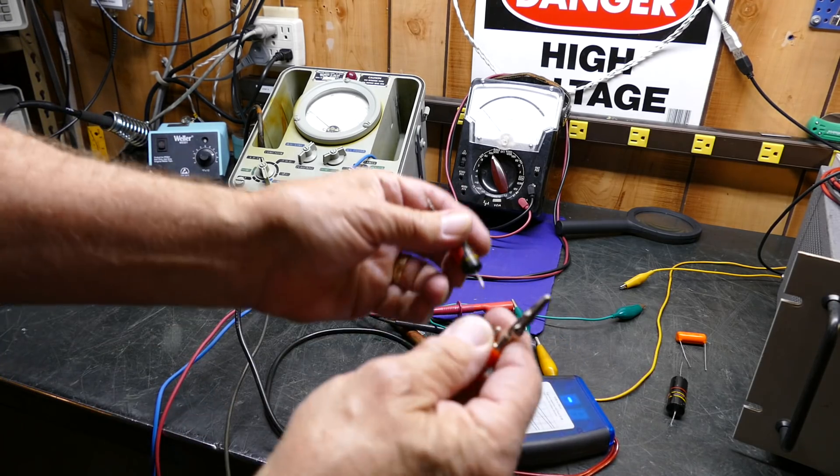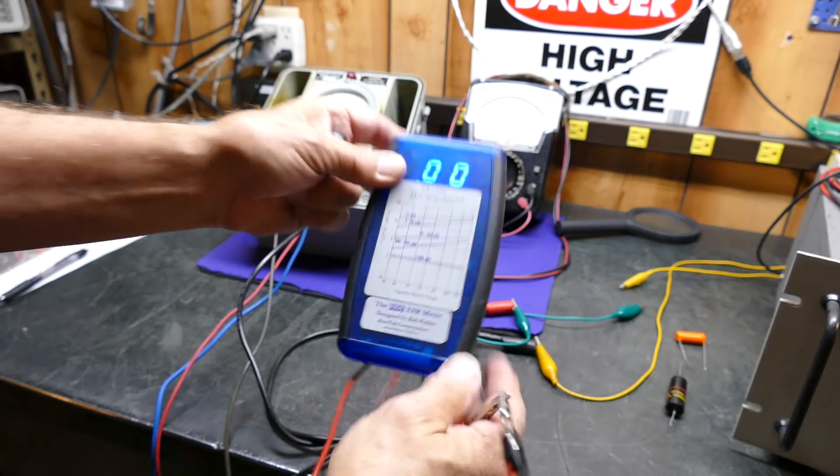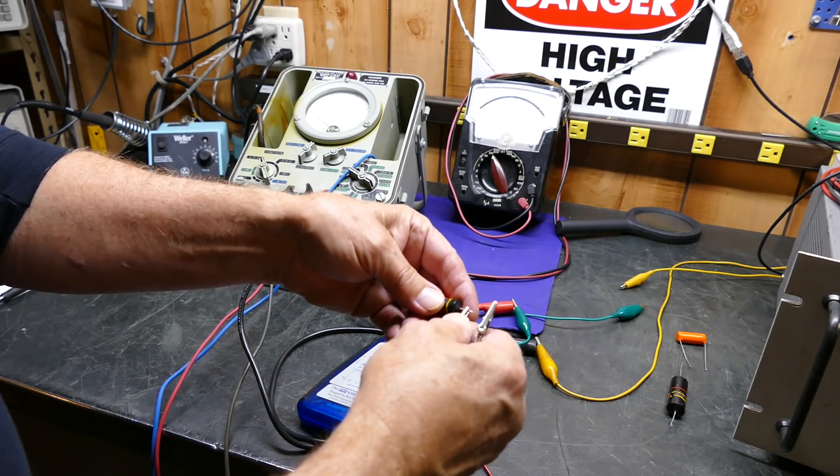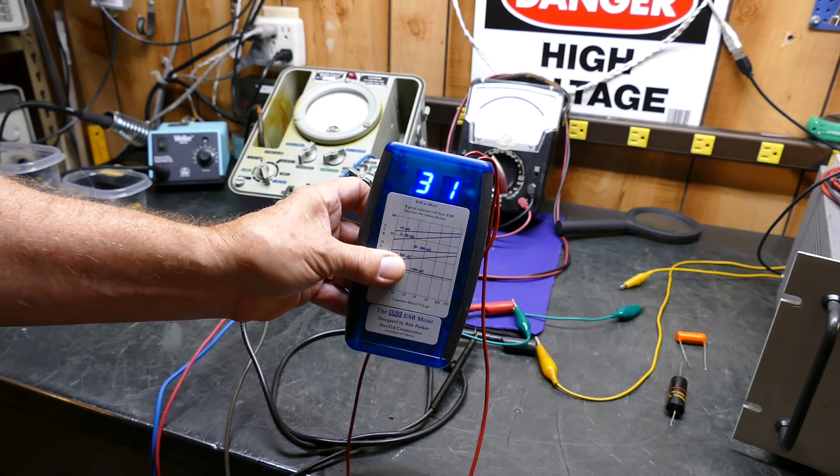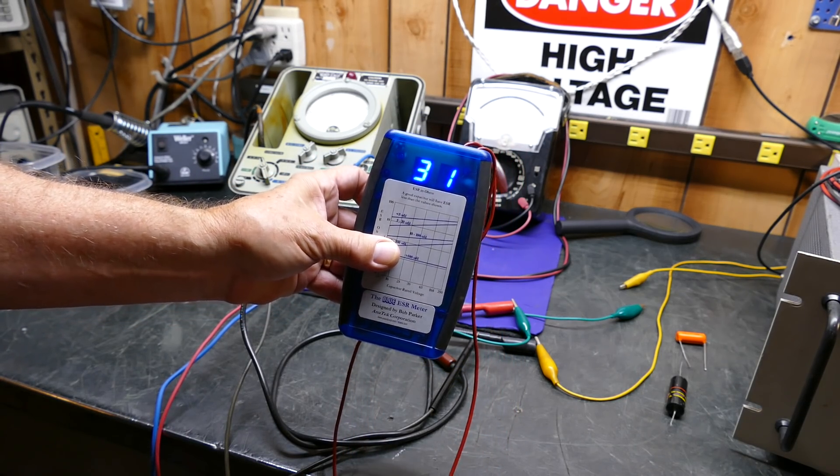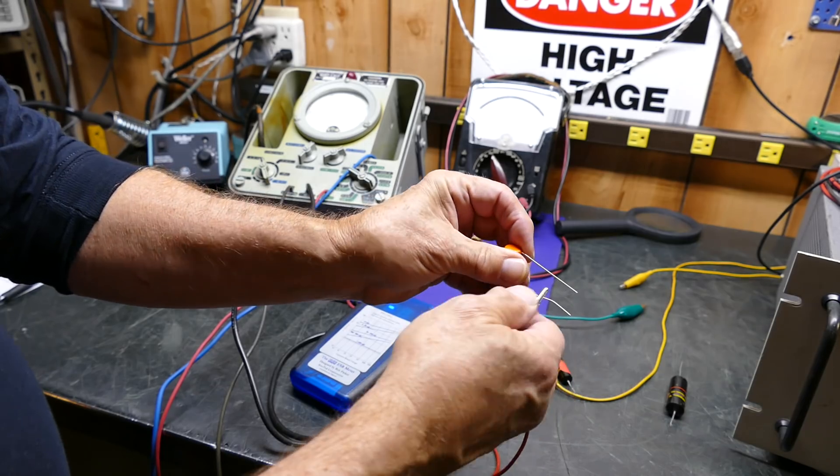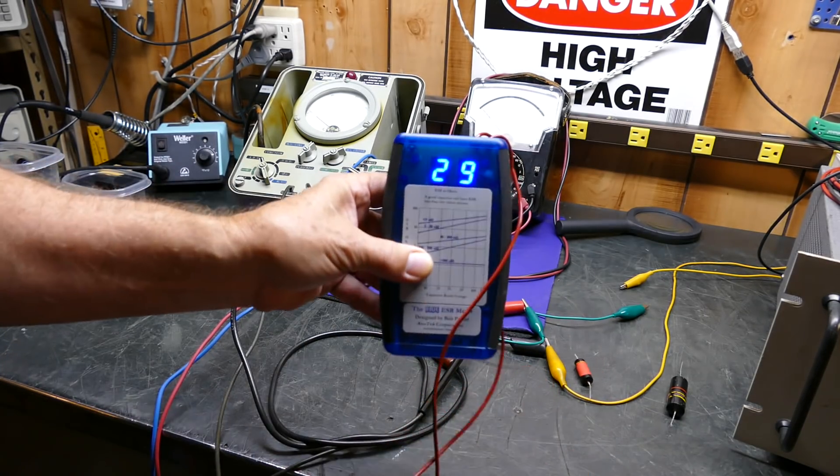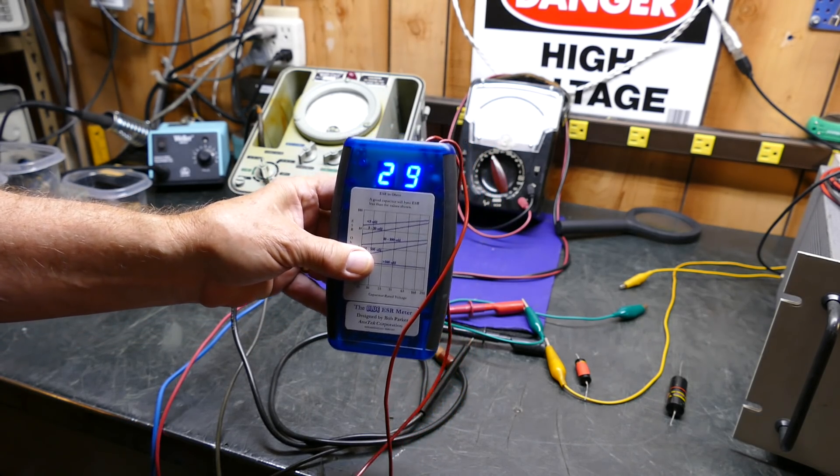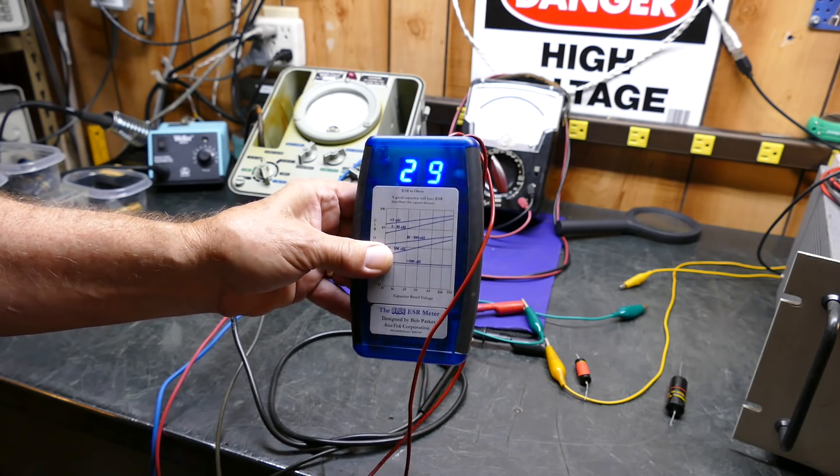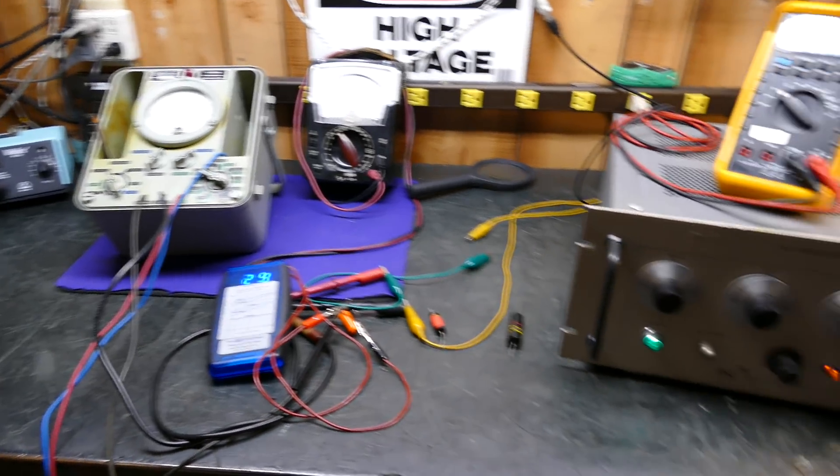First zero out our ESR meter and put it across this guy. Reads 31 ohms. Okay, what does that mean? Well, if we compare it to a new one, a new one measures 29 ohms. So is it good or bad? They're too close to know for sure.